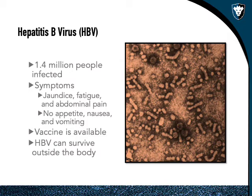Hepatitis B is a pretty common and serious disease. Symptoms include jaundice, fatigue, abdominal pain, loss of appetite, nausea, and vomiting. There is a vaccine for hepatitis B. Importantly, it survives outside the body for a long time — at least a week in dried blood on surfaces such as a work table, knife, tools, or broken glass.